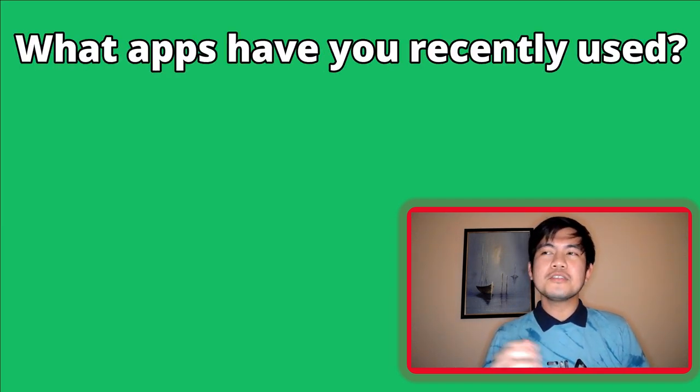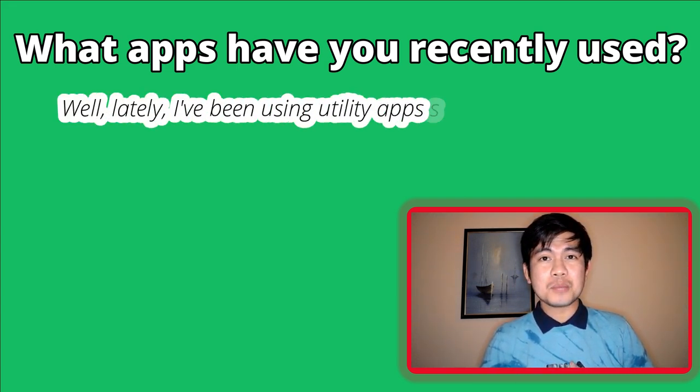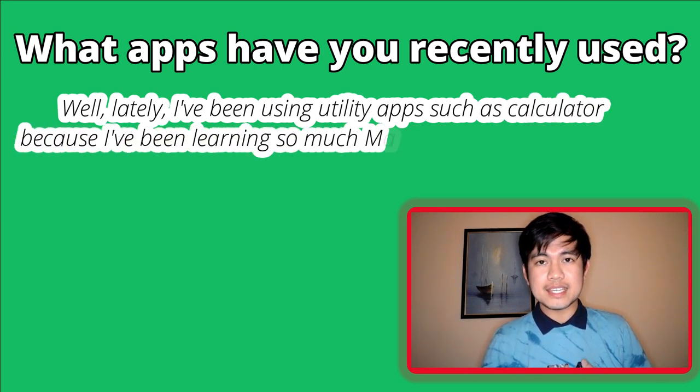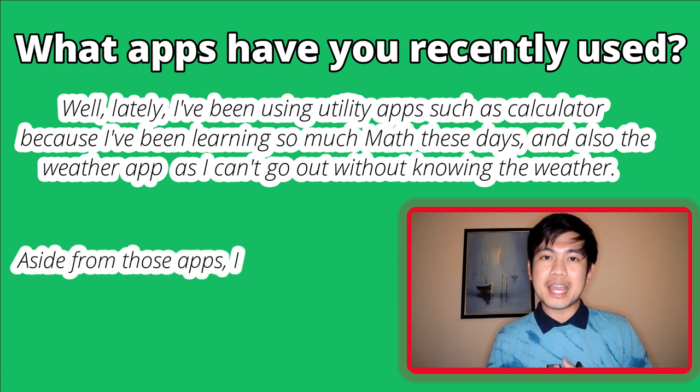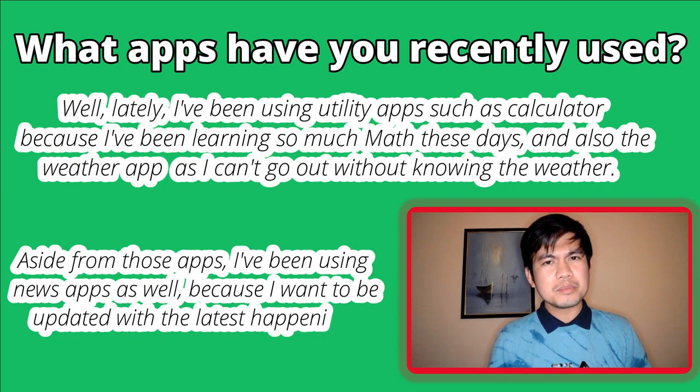It's great if you know the category of the app you're using because that can help you express yourself more. For example, if the question is 'What apps have you recently used?' I can answer: 'Lately, I've been using utility apps such as a calculator because I've been learning so much math. And also the weather app, as I can't go out without knowing the weather. I've also been using news apps because I want to be updated with the latest happenings in the world.' The answer doesn't sound ordinary — it's not a common answer that most test takers say.